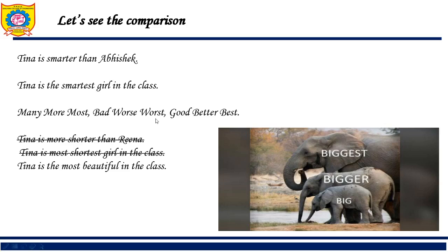We have words like many, more, most, bad, worst used for comparison. But 'Tina is more shorter than Rena' is completely wrong — I should say 'Tina is shorter than Rena.' Similarly, 'Tina is most shortest girl in the class' is wrong; I should say 'Tina is the shortest girl in the class.'